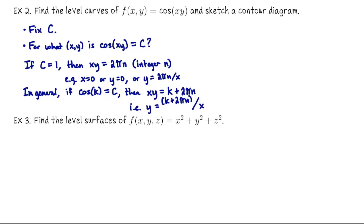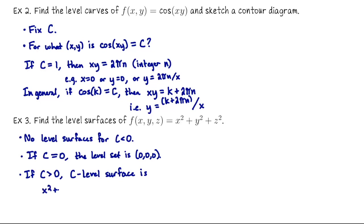For our next example, let's find the level surfaces of the function of three variables given by f of x, y, and z equals x squared plus y squared plus z squared. There are no level surfaces corresponding to negative values of c. If c equals zero, the level set is the origin. Otherwise, for positive values of c we're looking at spheres centered at the origin whose radius is the square root of c.